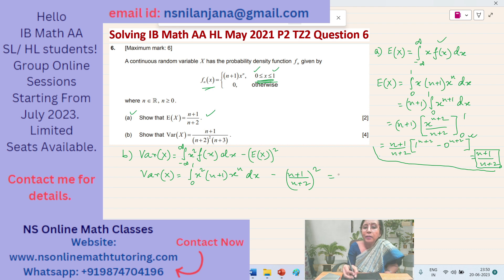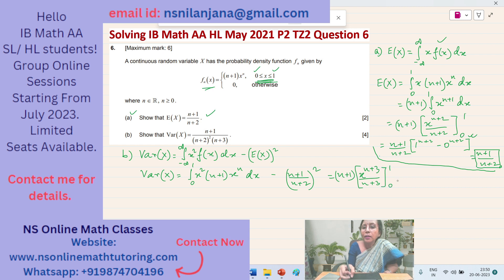We can take out the (n+1), and x squared times x to the power of n gives x to the power of (n+2). Integrating x to the power of (n+2) gives x to the power of (n+3) over (n+3), with limits 0 to 1, minus (n+1) squared over (n+2) squared.